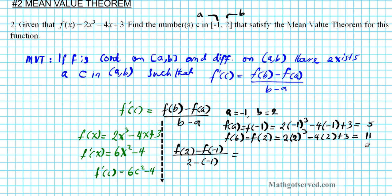Alright, so we'll just plug it into this formula right here. So we're going to have f of 2 is 11 minus f of negative 1, 5 divided by 2 minus minus 1, which makes it 3. 11 minus 5 is 6 over 3, which is 2. So this is the average rate of change.